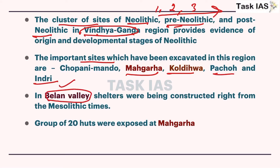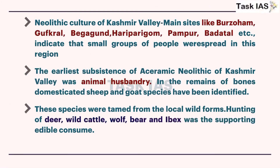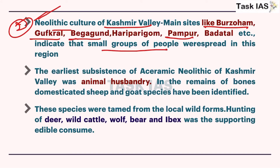Shelters are being constructed right from Mesolithic times - although Neolithic is known for shelters and sedentary life, you can see shelters in Belan Valley from Mesolithic times. Groups of 20 huts were exposed at Mahagra. The Neolithic culture of Kashmir Valley is the second region, with sites at Burjahom, Gufrakal, Begagund, and Pampur. These indicate that small groups of people were spread in this region, so population level is less here - you can compare how the difficult geography of Kashmir Valley constrained large population explosion.